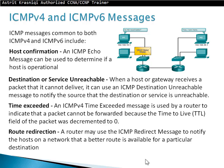Time exceeded. An ICMPv4 time exceeded message is used by a router to indicate the packet cannot be forwarded because the time-to-live field of the packet was decremented to 0. Remember the time-to-live field — every time there is a hop, it reduces the TTL by one. When TTL gets to zero, the packet will be dropped.